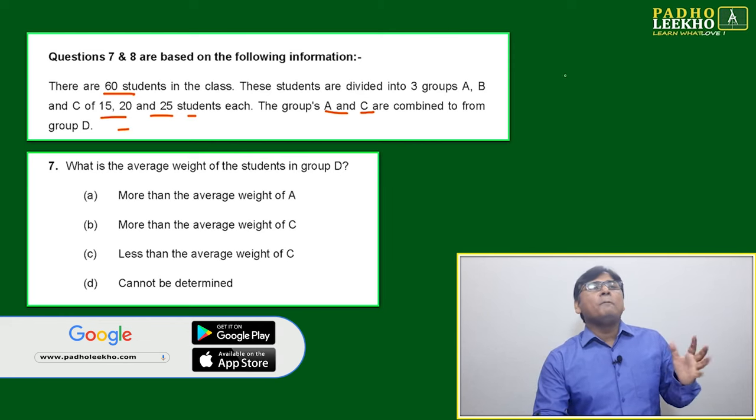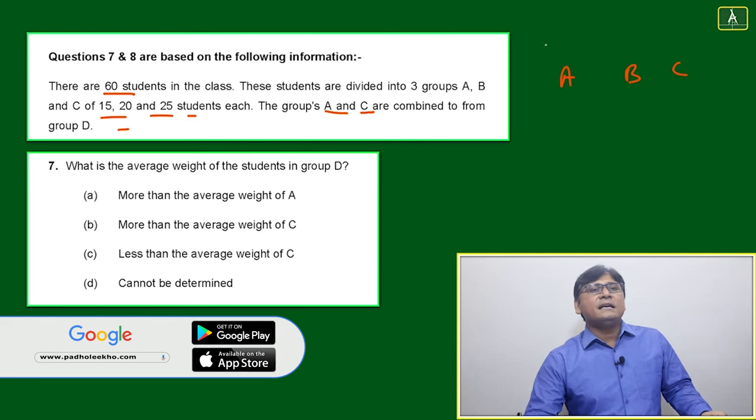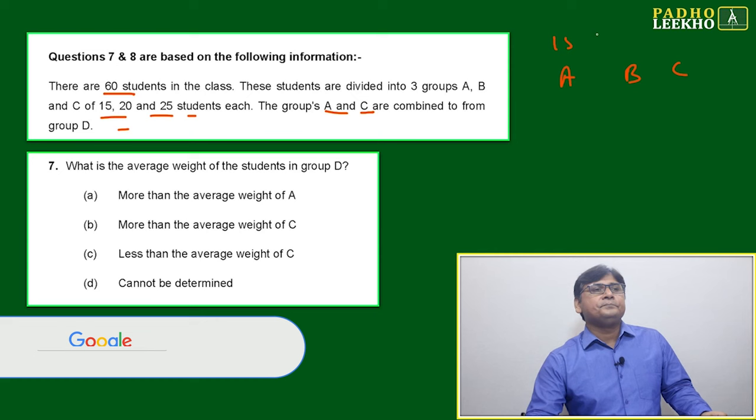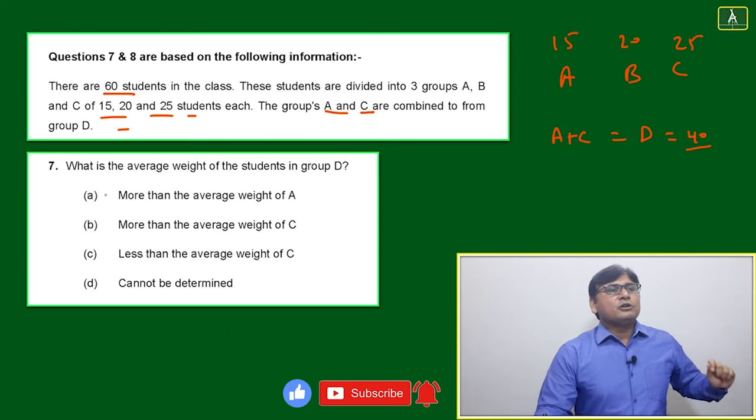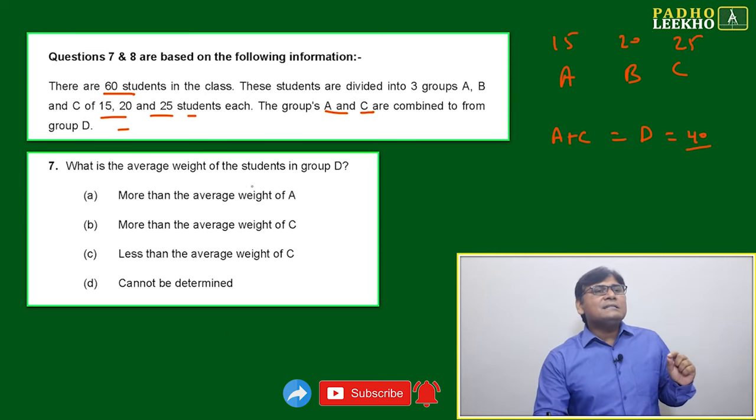A and C are combined to form D. Okay, means A, B, C - that is the only thing they are doing. A and C combined to form the group D. Now question number seven is asking: what is the average weight of the students in group D?